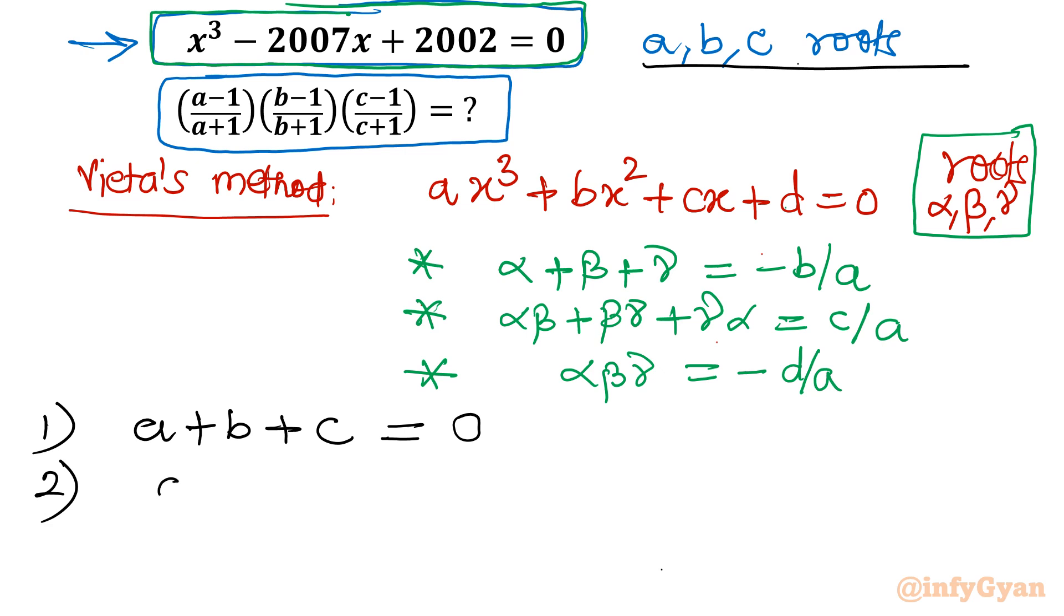Second: sum of roots taken two at a time. That is equal to c over a. And what is c? The coefficient of x, here minus 2007. a is one.